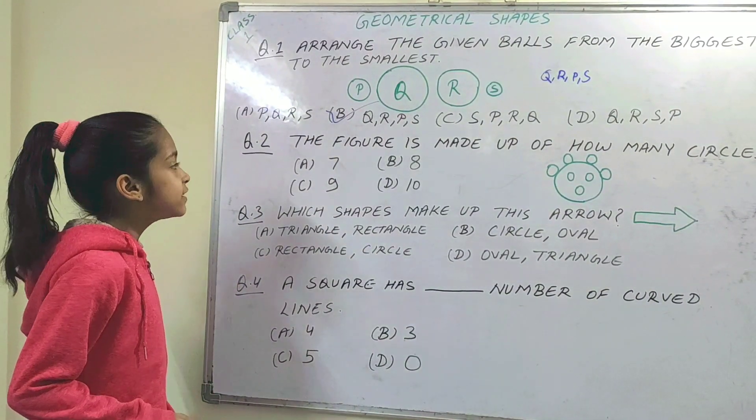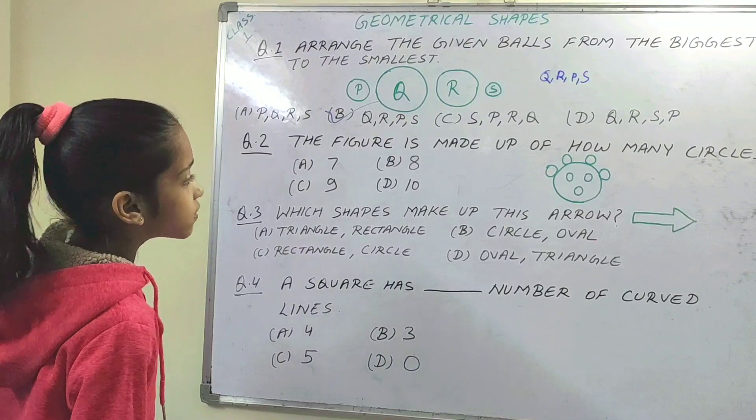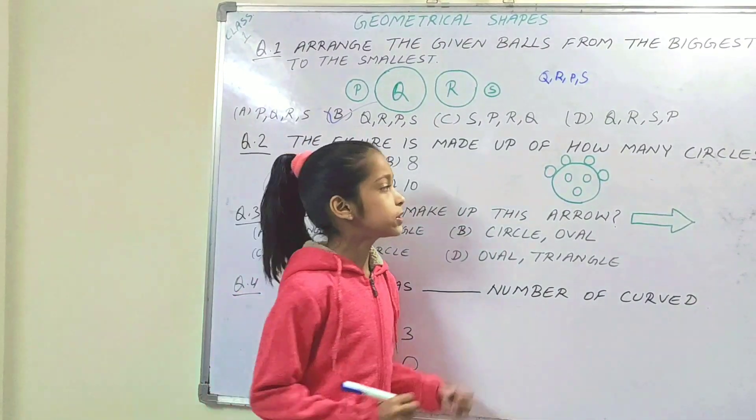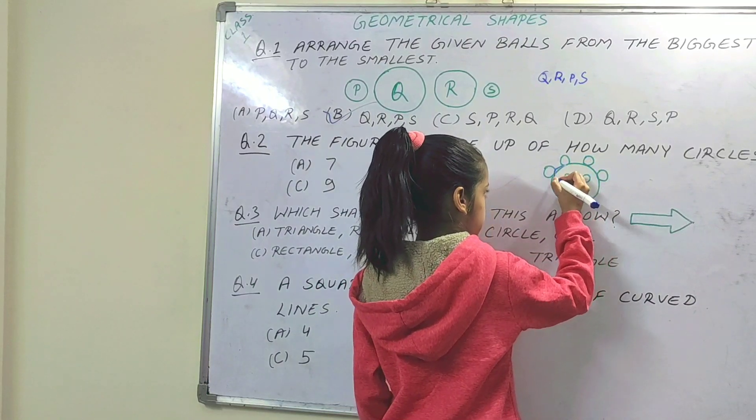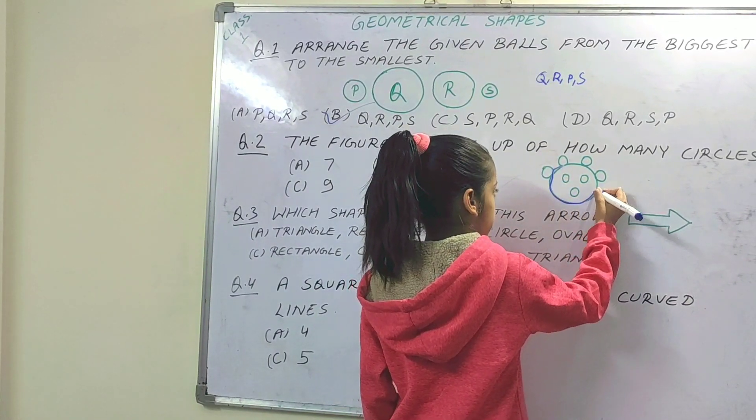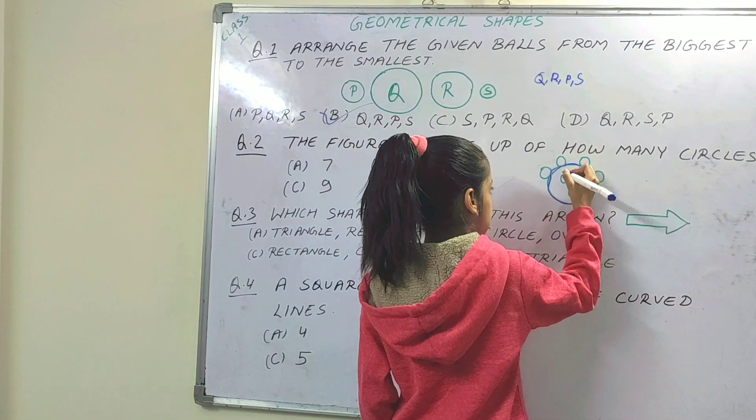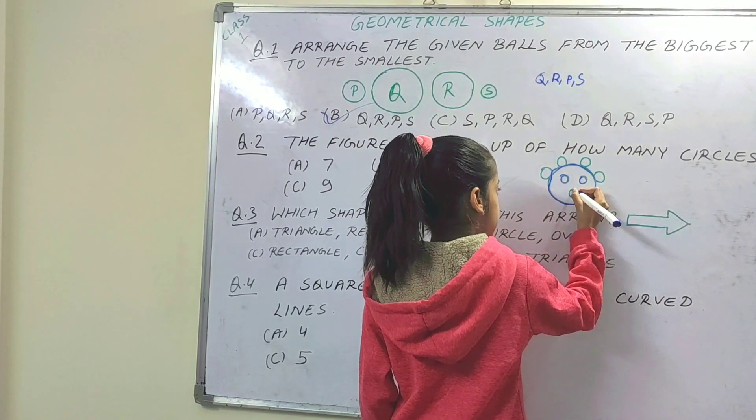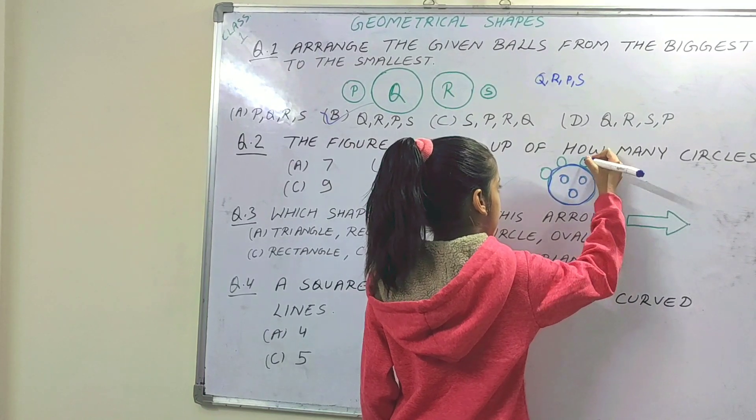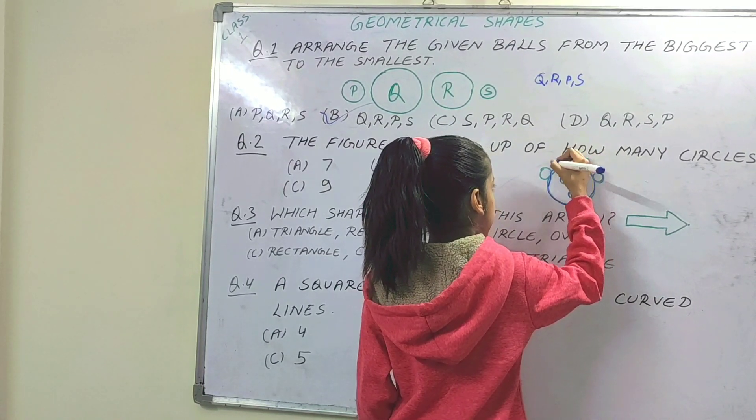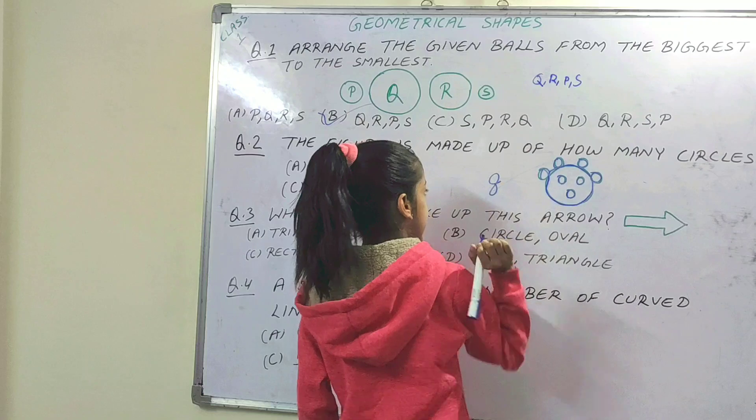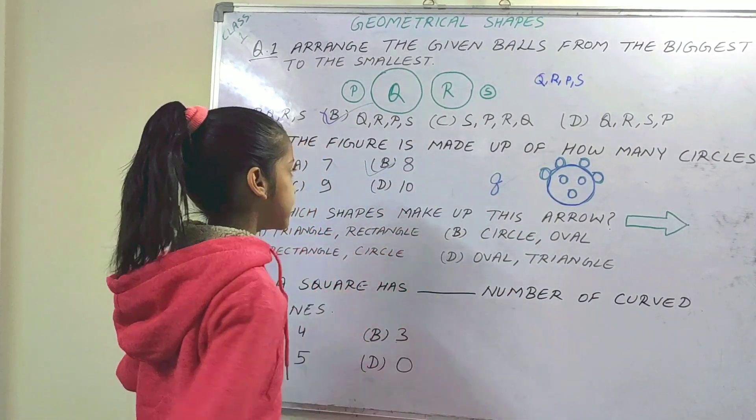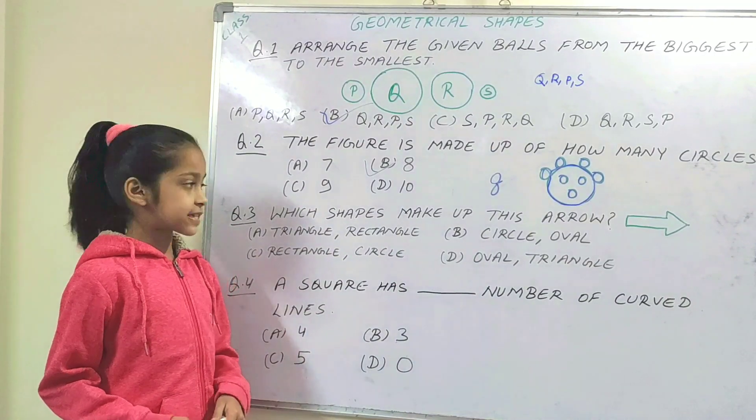Next question. The figure is made up of how many circles? So now we have to count how many circles in this figure. 1, 2, 3, 4, 5, 6, 7, 8. Totally 8 circles in this figure. So option B, 8 is the right option.